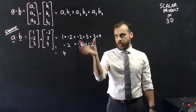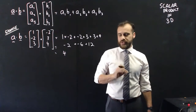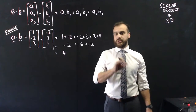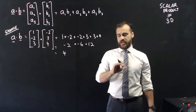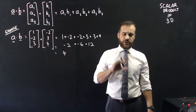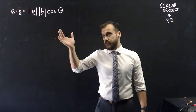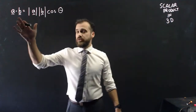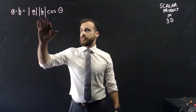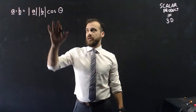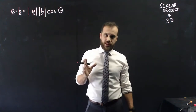Now that's one way to find the scalar product, but the real power of the scalar product is that there are two ways to calculate it. Our second way is the geometric interpretation. A dot B is equal to the magnitude of A times the magnitude of B, cosine the angle between them.